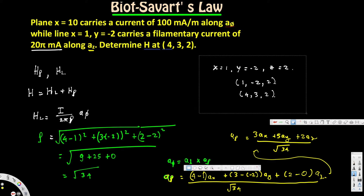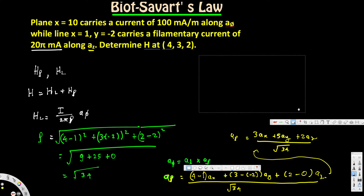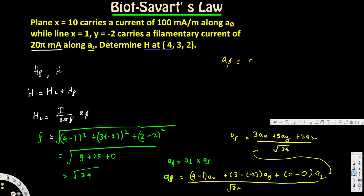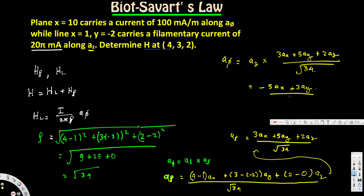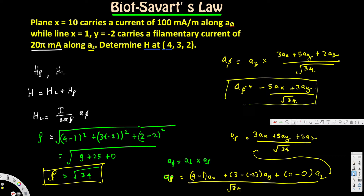So a_φ = a_z × (3a_x + 5a_y + 2a_z) / √34. The a_z × a_z term goes to zero. Performing the cross product gives a_φ = (-5a_x + 3a_y) / √34. We now have both ρ = √34 and a_φ, so we can plug into H_L = I/(2πρ) * a_φ.